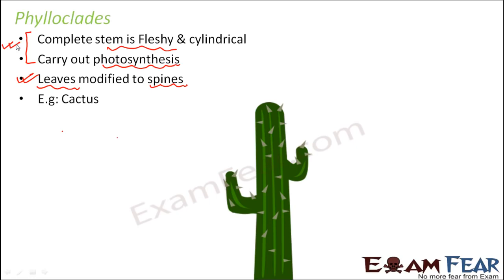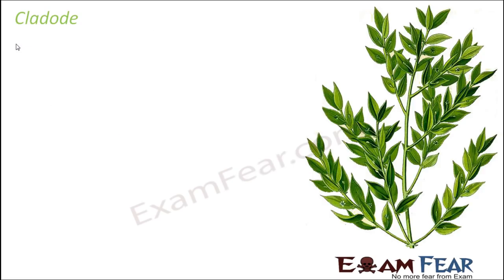Many people get confused and think that cactus should be an example of stem thorns because it has thorns. But those thorns in cactus are not a modification of the stem — they are a modification of the leaves. Please understand this important difference.